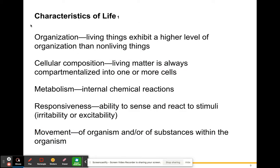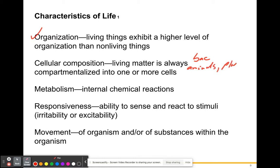Some characteristics of life — you should have learned these in biology throughout high school and college. We already discussed organization with cells, tissues, organs, and organ systems. Cellular composition means all living matter is made from one or more cells. Bacteria are single-celled organisms; animals, plants, and fungi can be multi-celled; protists can be single- or multi-celled. All living things must be at least one or more cells, and we humans are made of many billions of cells.